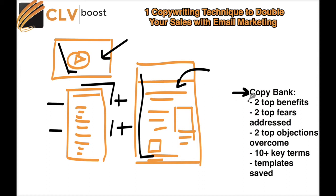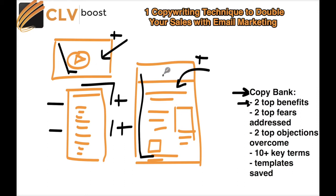Ask yourself: what are the two top benefits that these positive assets — my best converters — all have in common? If I just look at the positive outliers, what do the emails and the sales assets all have in common? If I could only pick two benefits that most often overlapped with my best, highest converting material, what would those two top benefits be? Write those down.